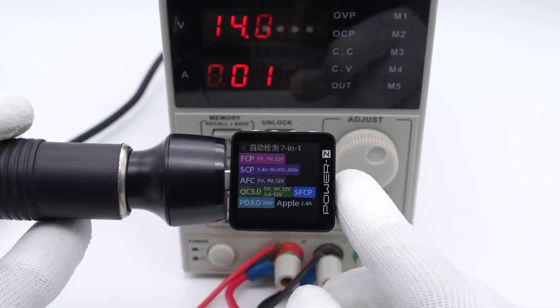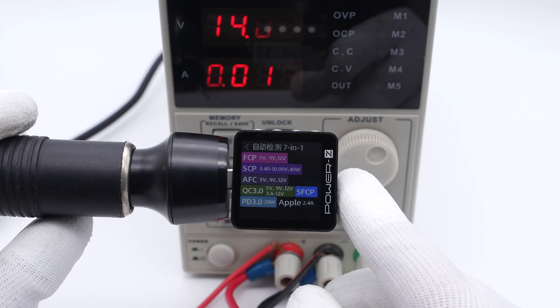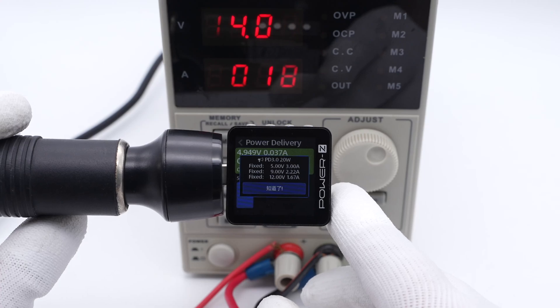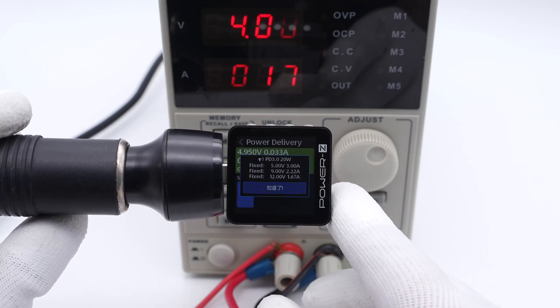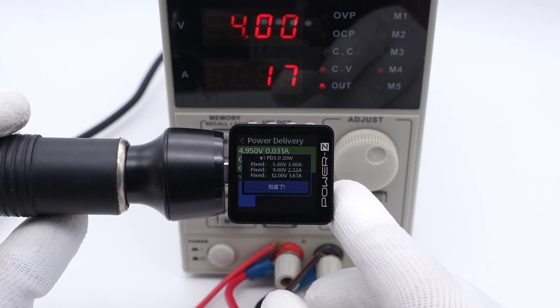As for USB-C2, it supports FCP, SCP, AFC, QC3.0, SFCP, PD3.0, and Apple 2.4A protocols. It also has three fixed PDOs of 5V 3A, 9V 2.22A, 12V 1.67A.